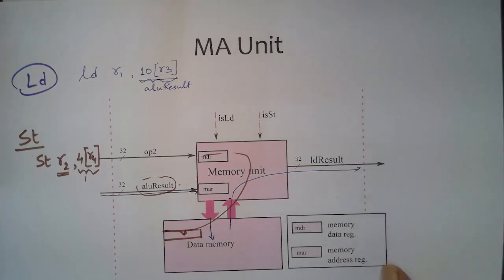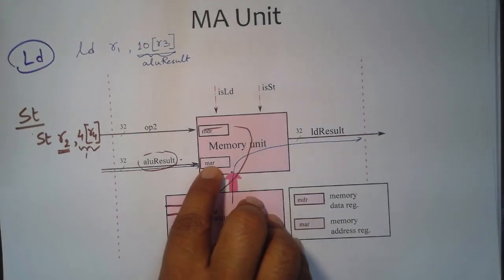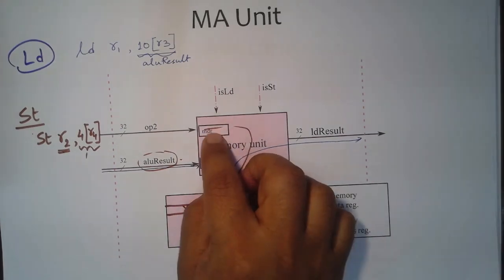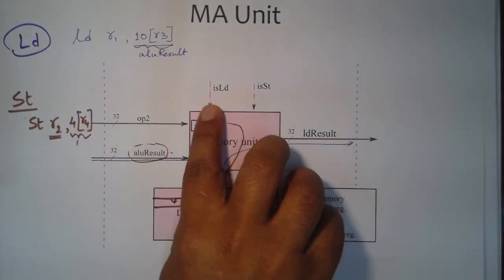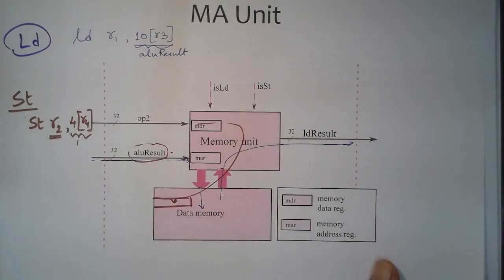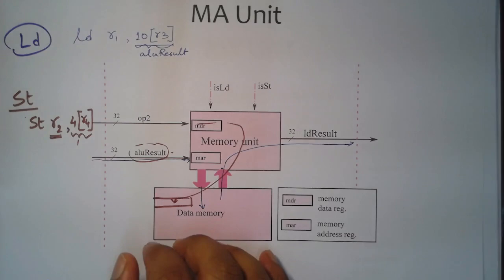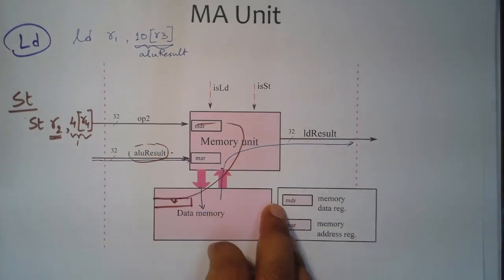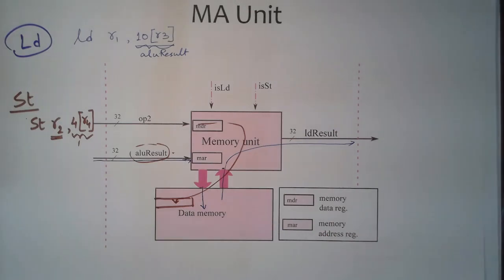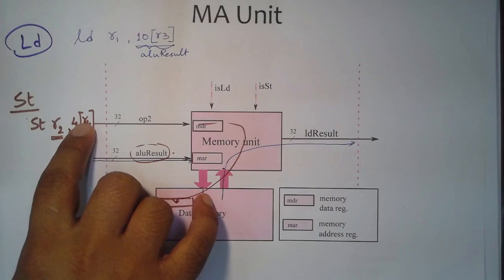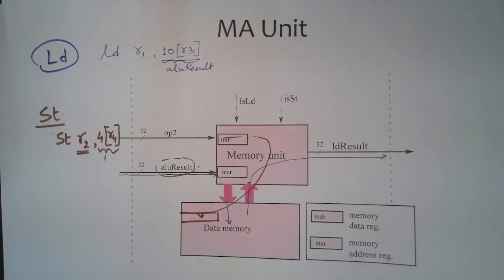The memory unit has two temporary registers: the memory address register and the memory data register, holding the address where data needs to be stored and the data itself. Control signals indicate whether it is a load or store instruction. For load, the address is read and the content is retrieved as the load result. For store, the address and the op2 content are used to write the value into memory.